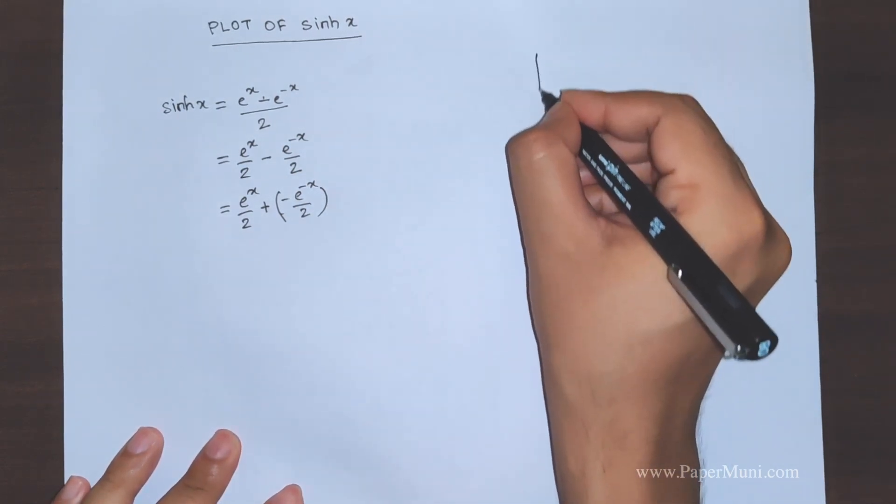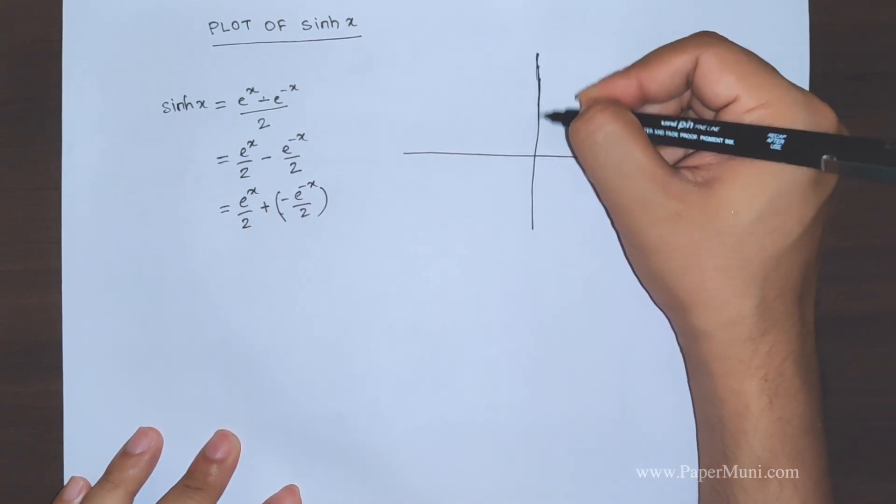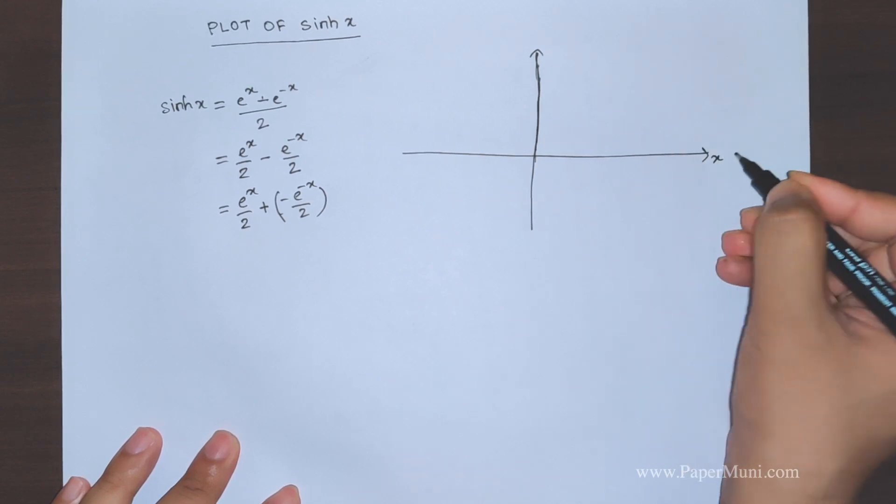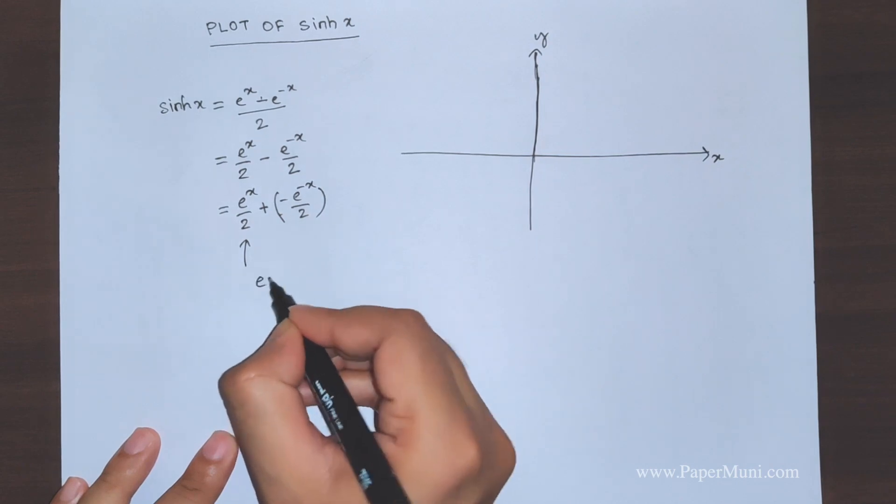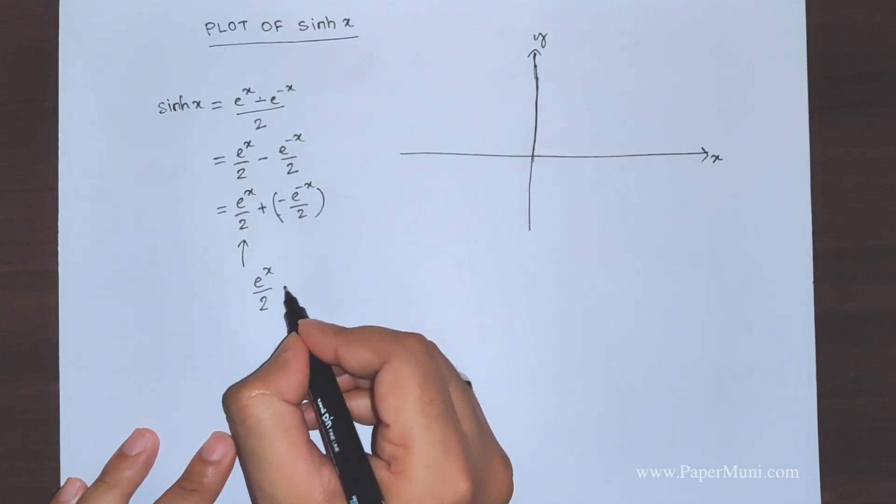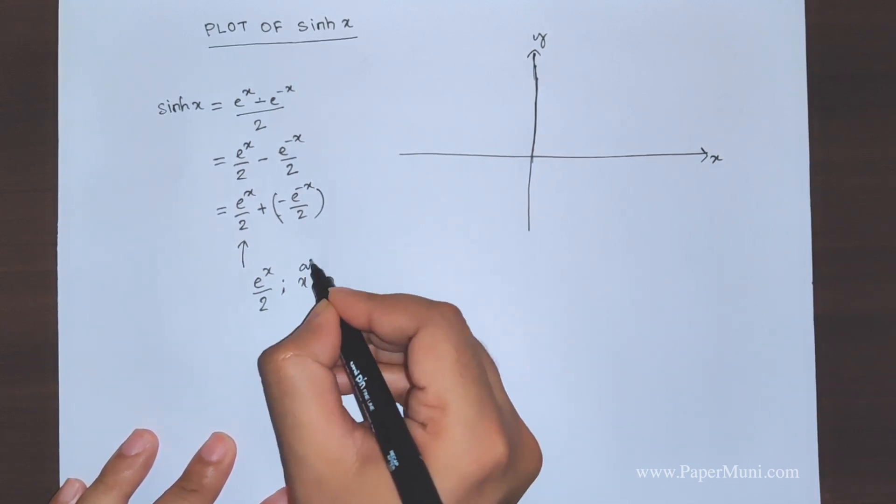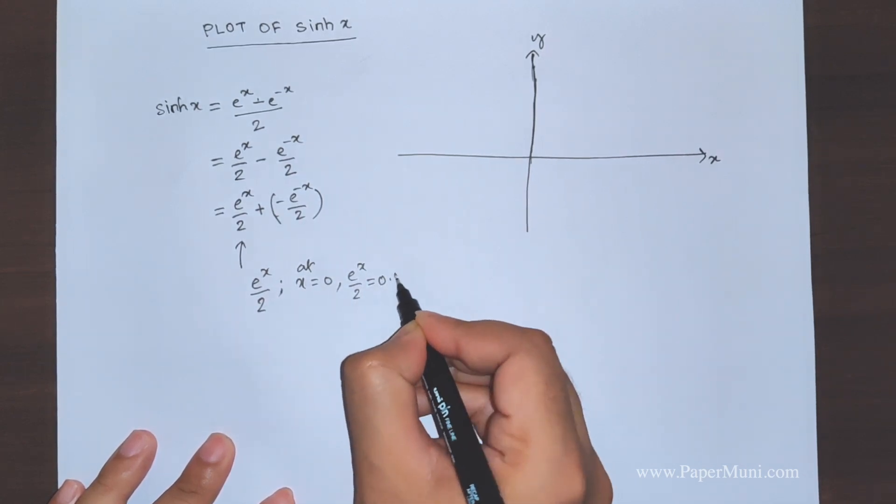Let's draw the graph. If this is the x-axis, this is the y-axis, now let's plot this one. We know that e to power x by 2, at x equal to 0, this becomes 0.5. So say this is 1, this is 0.5, so this graph will pass through 0.5.